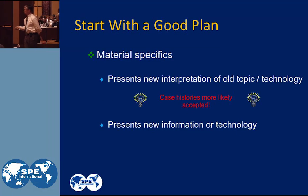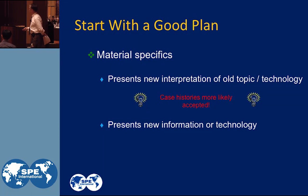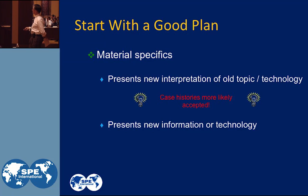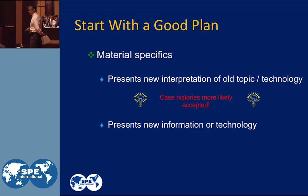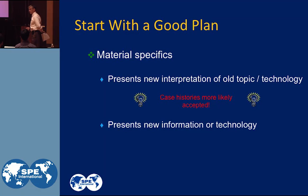Material specifics: you have to present maybe a new interpretation of an old topic or technology, or present new information or technology. There are two types of papers. Case histories are more likely accepted — just remember that. Program committees like case histories, because that takes sometimes old technology or new technology and uses it a different way. Those are good papers.